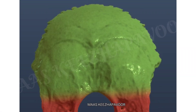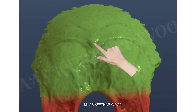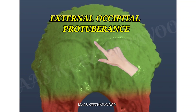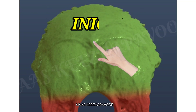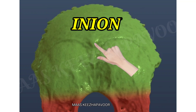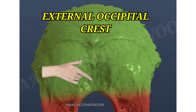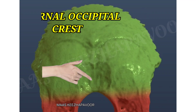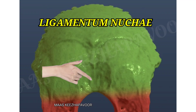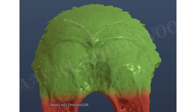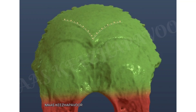The external surface shows a small rounded prominent elevation at the center called the external occipital protuberance. The most prominent part of this protuberance is called the inion. The external occipital crest runs from the external occipital protuberance to the posterior border of the foramen magnum. It gives attachment to the ligamentum nuchae.